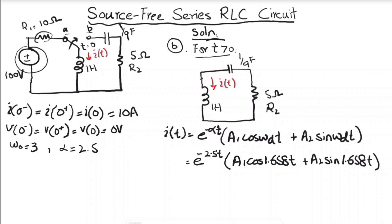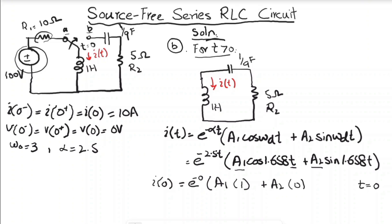To find a1 and a2, we apply initial conditions at t = 0. Substituting t = 0 into the equation: e^0·[a1·cos(0) + a2·sin(0)] = a1 (since cos(0)=1 and sin(0)=0). Since i(0) = 10 amperes, we get a1 = 10.